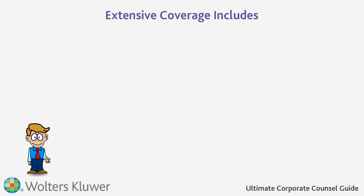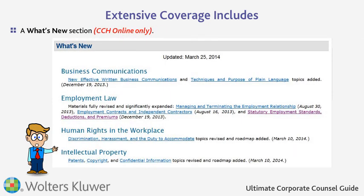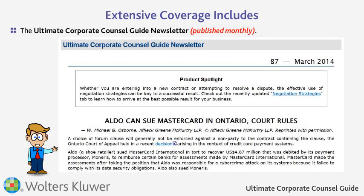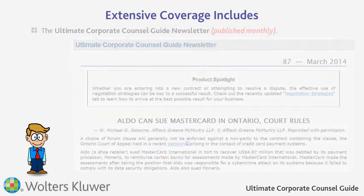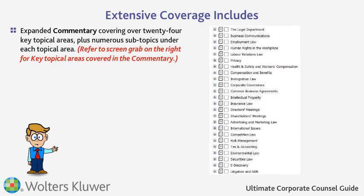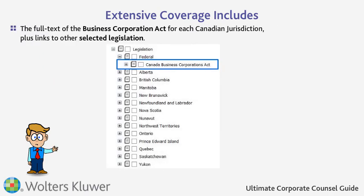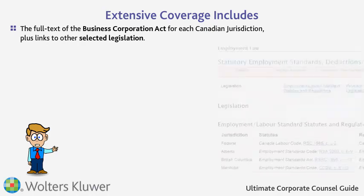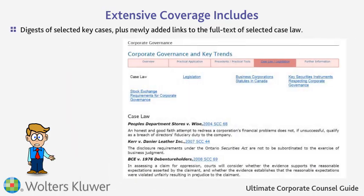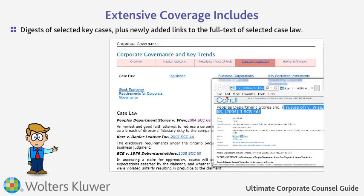Extensive coverage in the guide includes a What's New section, available in the internet version only, the popular monthly newsletter titled The Ultimate Corporate Council Guide Newsletter, expanded commentary which offers over 24 topical areas with numerous subtopics under each, the full text of the Business Corporation Act for each Canadian jurisdiction plus links to other selected legislation, a Digest of selected key cases, plus newly added links to the full text of selected case law.